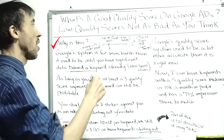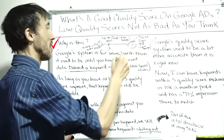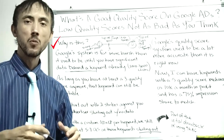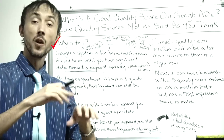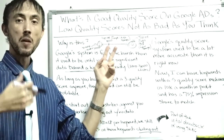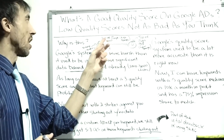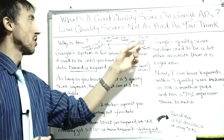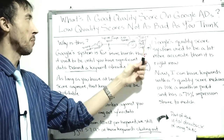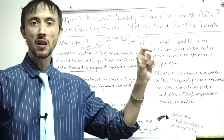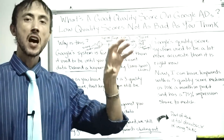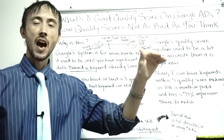Google's quality score system goes from one to ten. If you go to Google Keyword Planner and type in a keyword, you'll see two numbers — top of page high range bid and top of page low range bid. If you get a ten out of ten quality score for that keyword, you'll pay basically the top of page low range bid. That comes from having the top 10% of click-through rates compared to the other advertisers cycling in and out for that keyword, and also the top 10% of conversion rates.